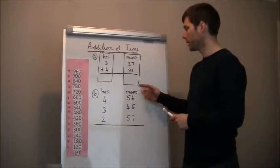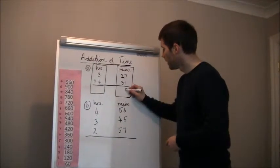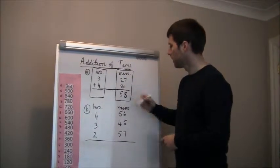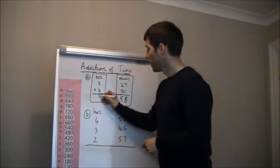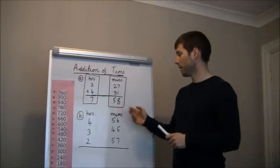So let's start with our minutes as a separate sum. Seven plus one is eight, and two plus three is five. That's our minutes sum done. We move over to our hours. Three plus four is seven. So our answer to question A is seven hours 58 minutes.